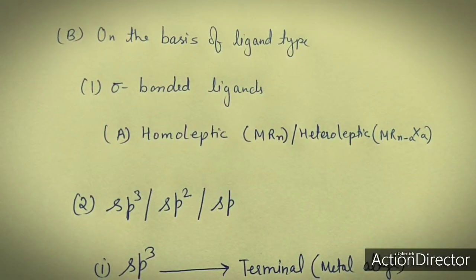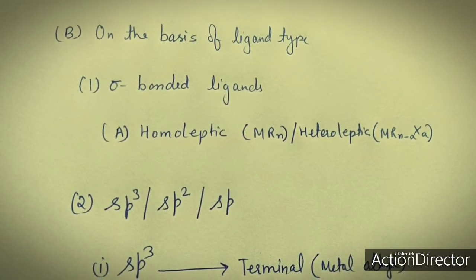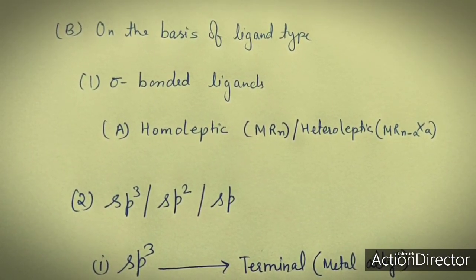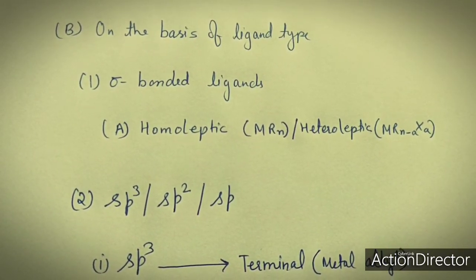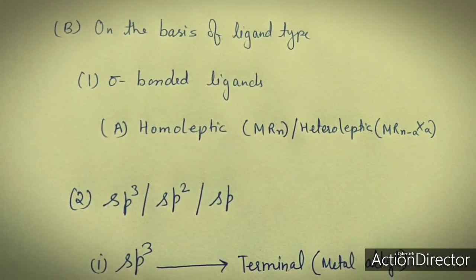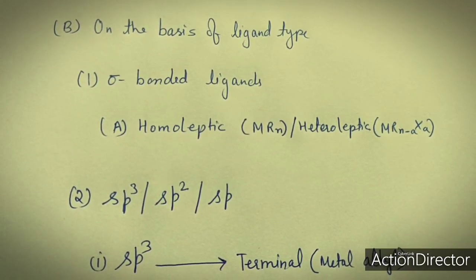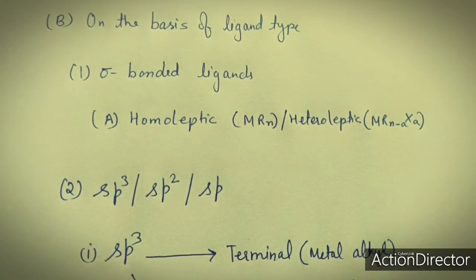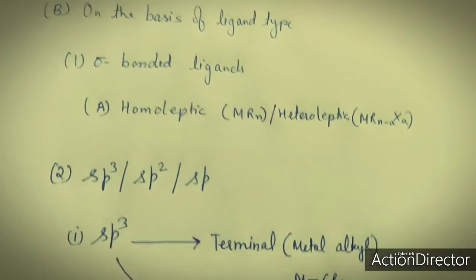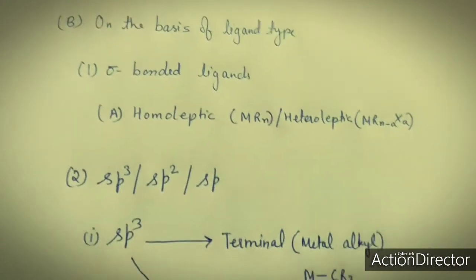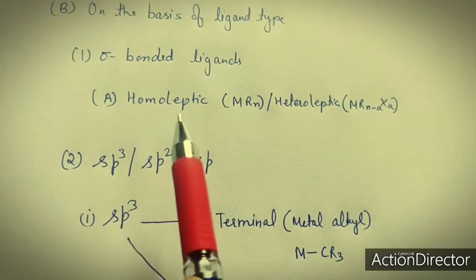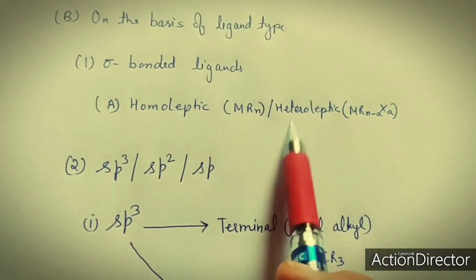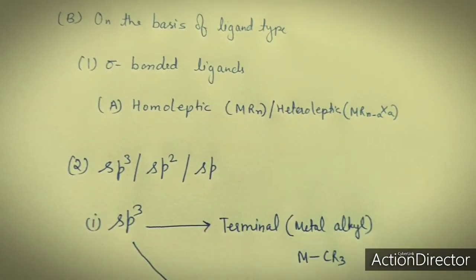To summarize the first classification: on the basis of 18 valence electrons, organometallic compounds are classified into three classes. Class 1 has valence electrons from 12 to 22, class 2 has electrons from 12 to 18, and class 3 has exactly 18 electrons. The other classification is based on ligand types: sigma bonded ligands and pi bonded ligands. For sigma bonded ligands, the compounds can be further classified as homoleptic and heteroleptic.